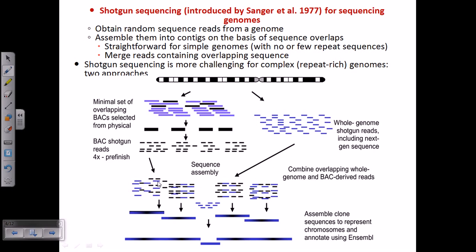Now let us talk about Shotgun Sequencing. Shotgun Sequencing was introduced by Sanger et al. in 1977 for sequencing of genomes. Nowadays, Shotgun Sequencing has been modified in many ways and we have many more advanced types of Shotgun Sequencing.